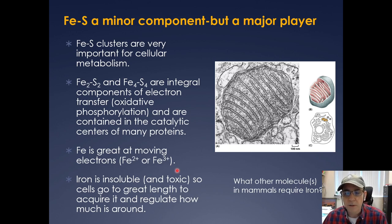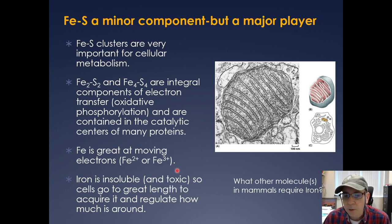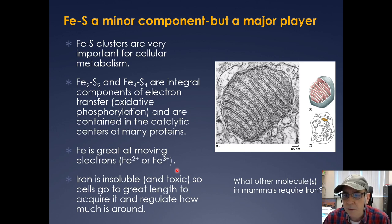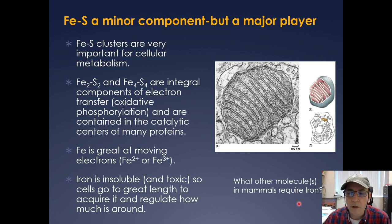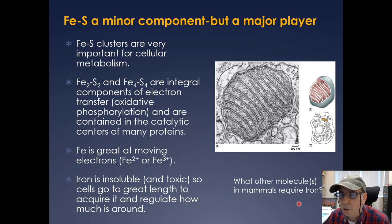Iron is insoluble and also toxic, so cells go to great lengths to acquire the appropriate amount and regulate how much is around. Too much iron becomes toxic; too little makes it difficult to survive. Other molecules in mammals that require iron include hemoglobin and myoglobin, which are involved in shuttling oxygen around.